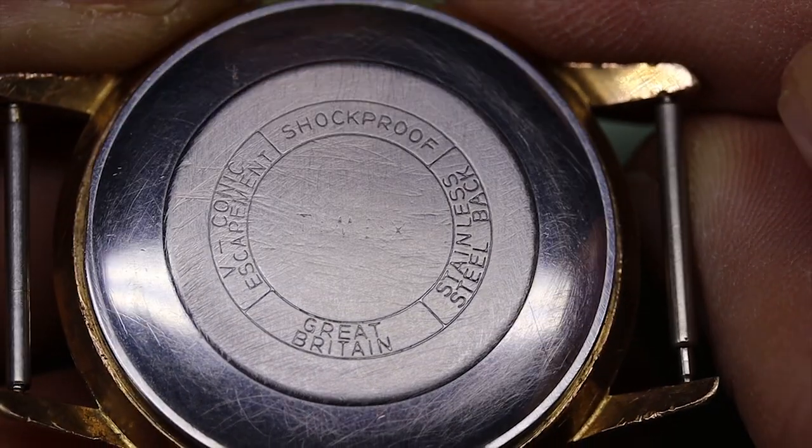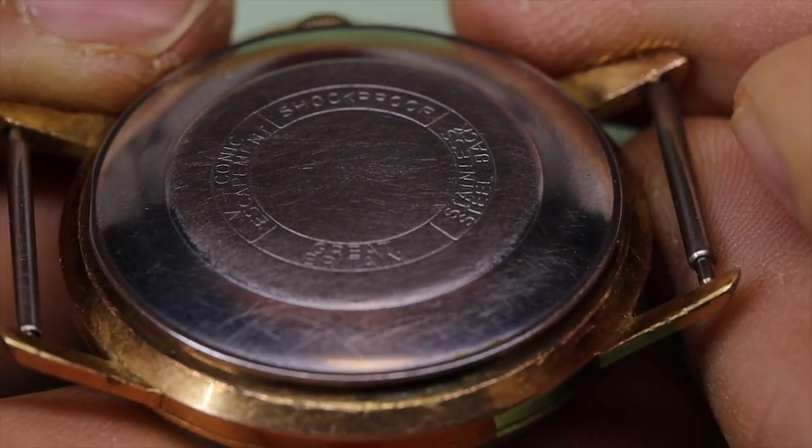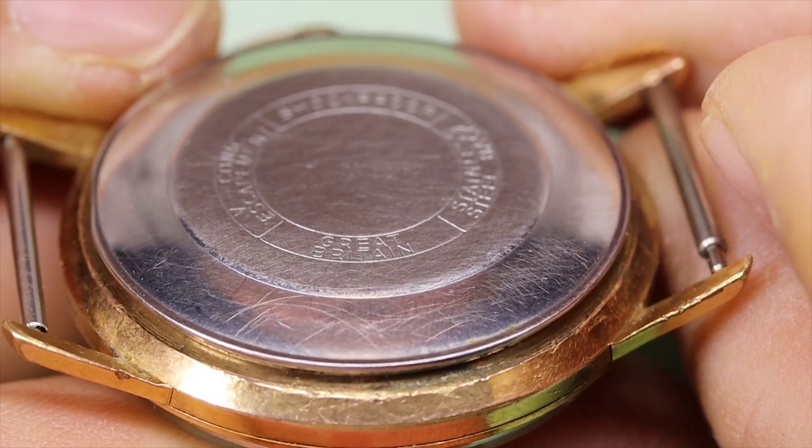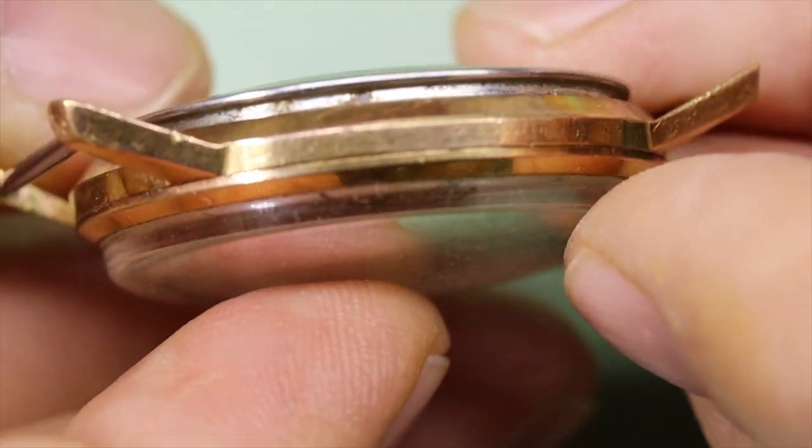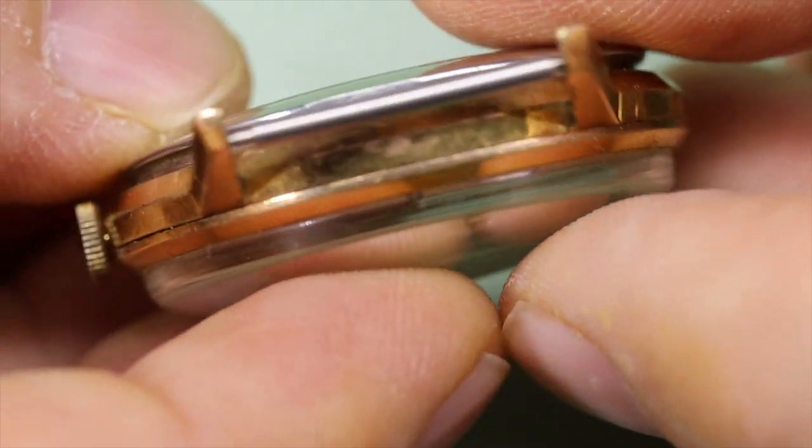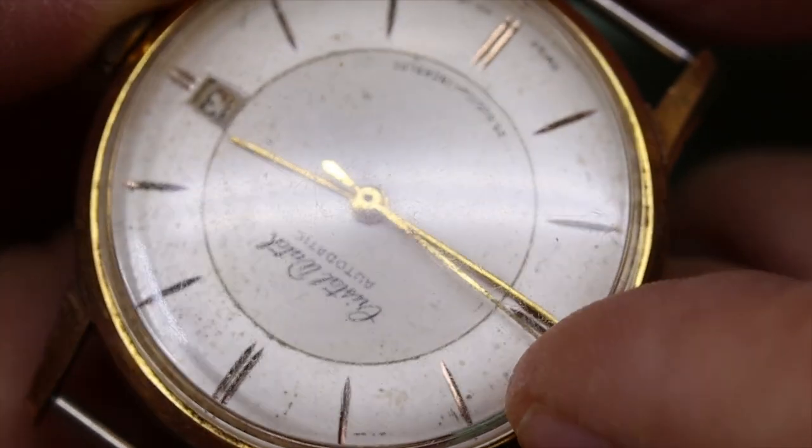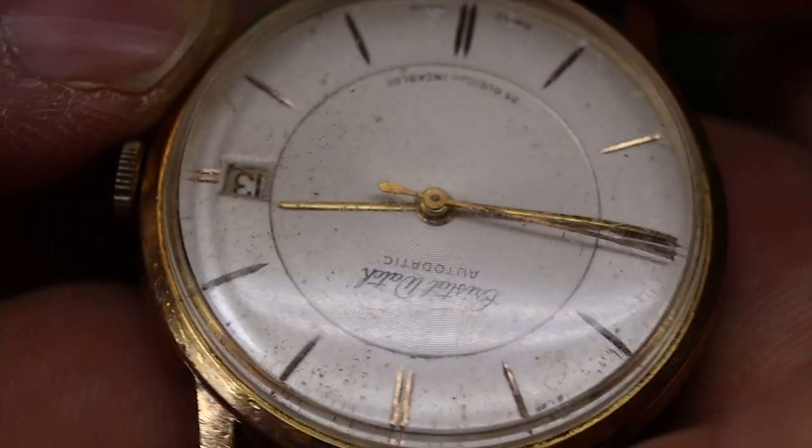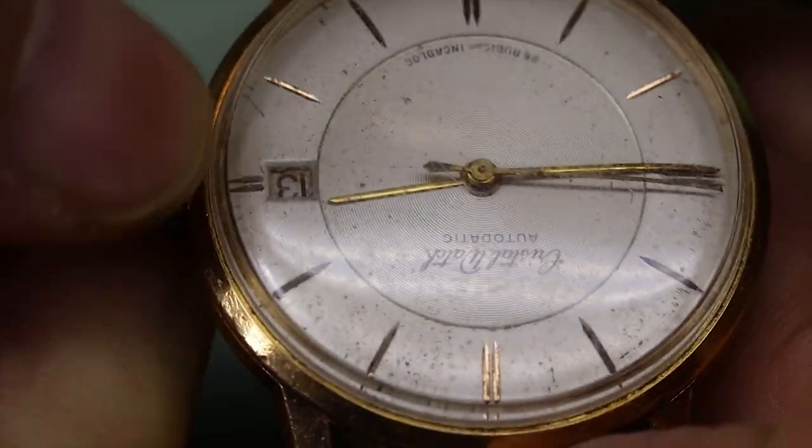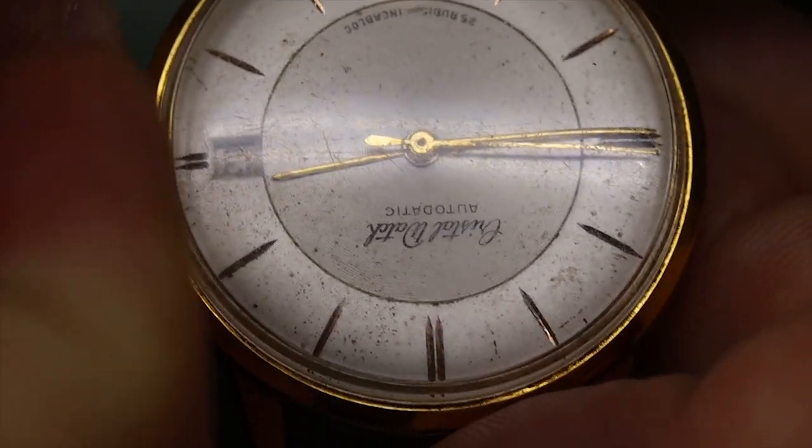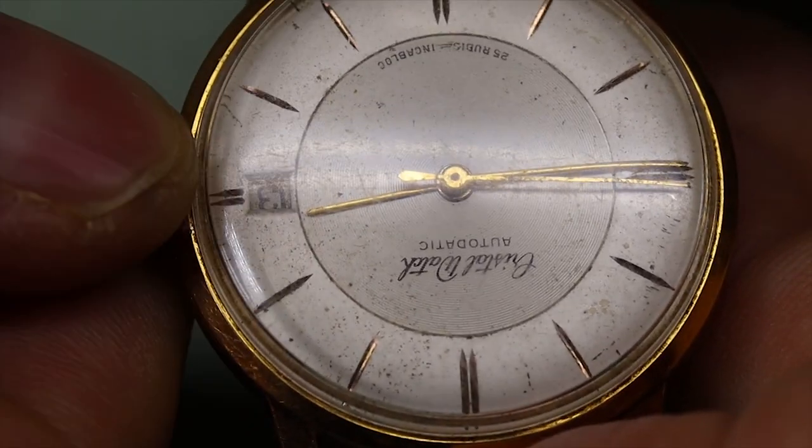The back says Great Britain and it's got a Timex logo in the middle, so it's obviously not made to go with this watch. The crown has worn off the gold plating and nothing happens if we try to wind the watch. We cannot set the hands, so something is absolutely wrong here.